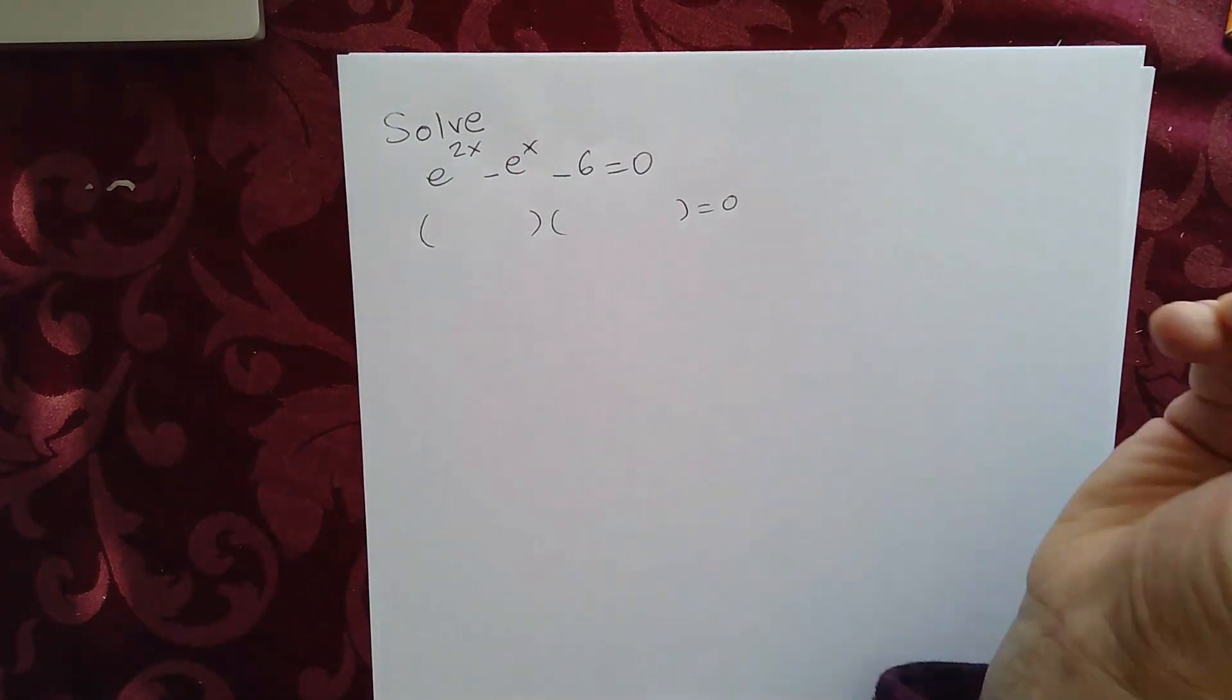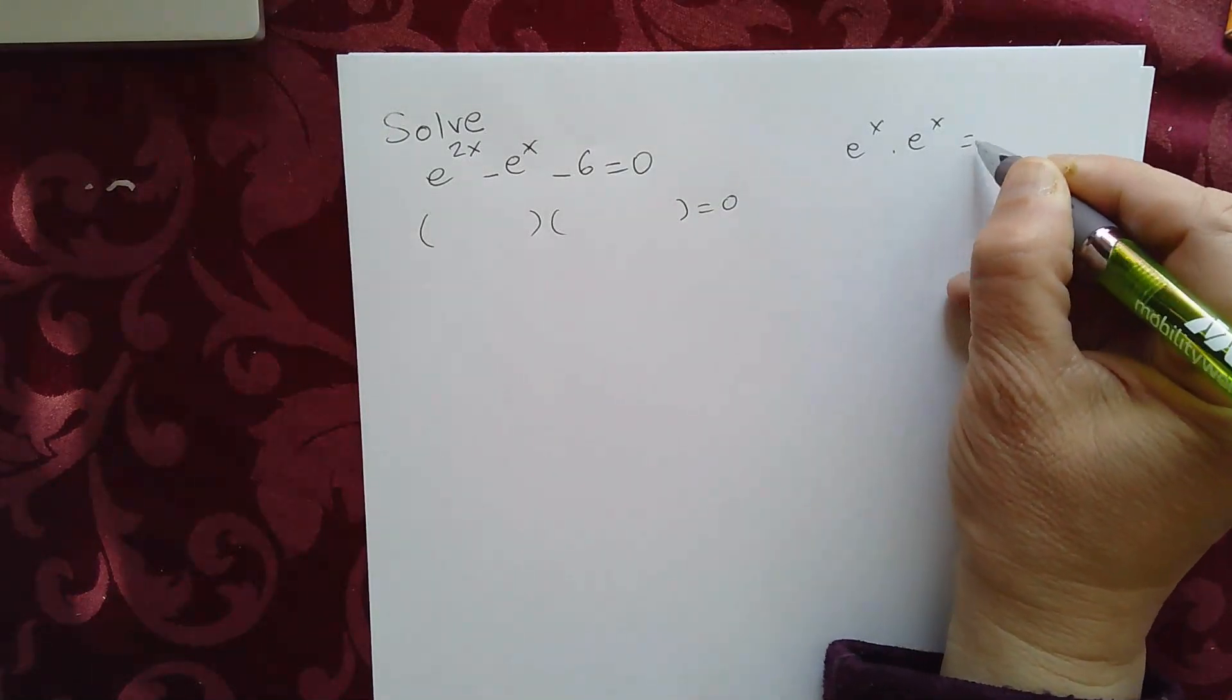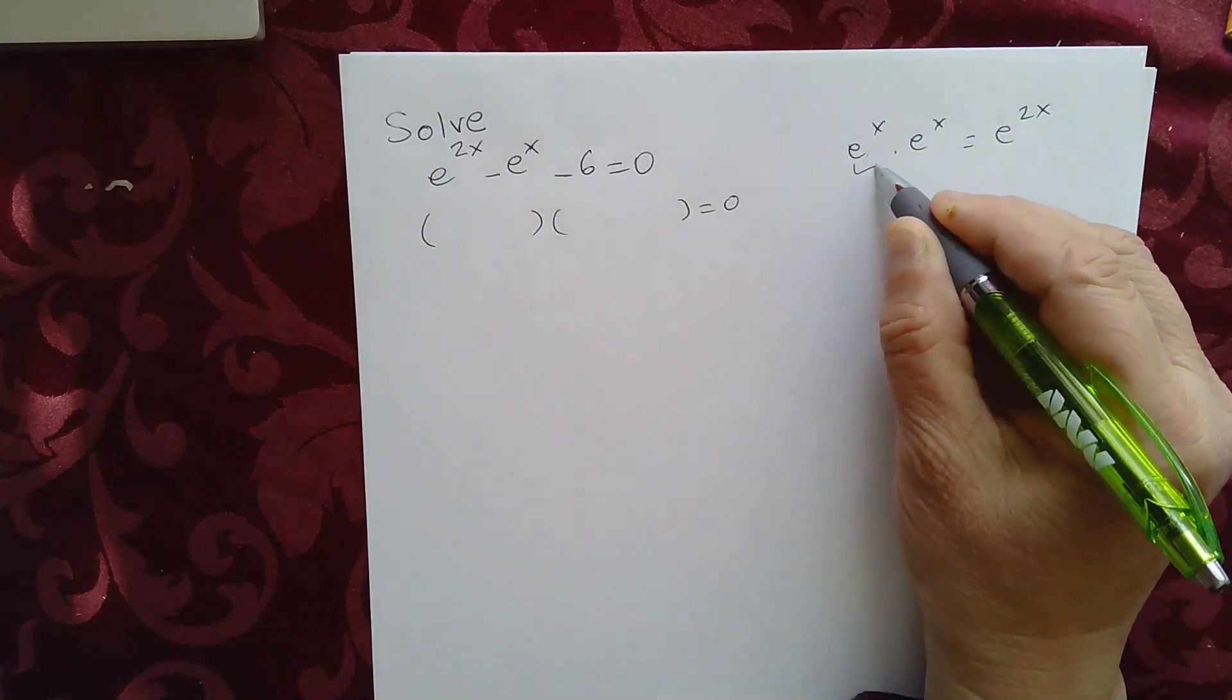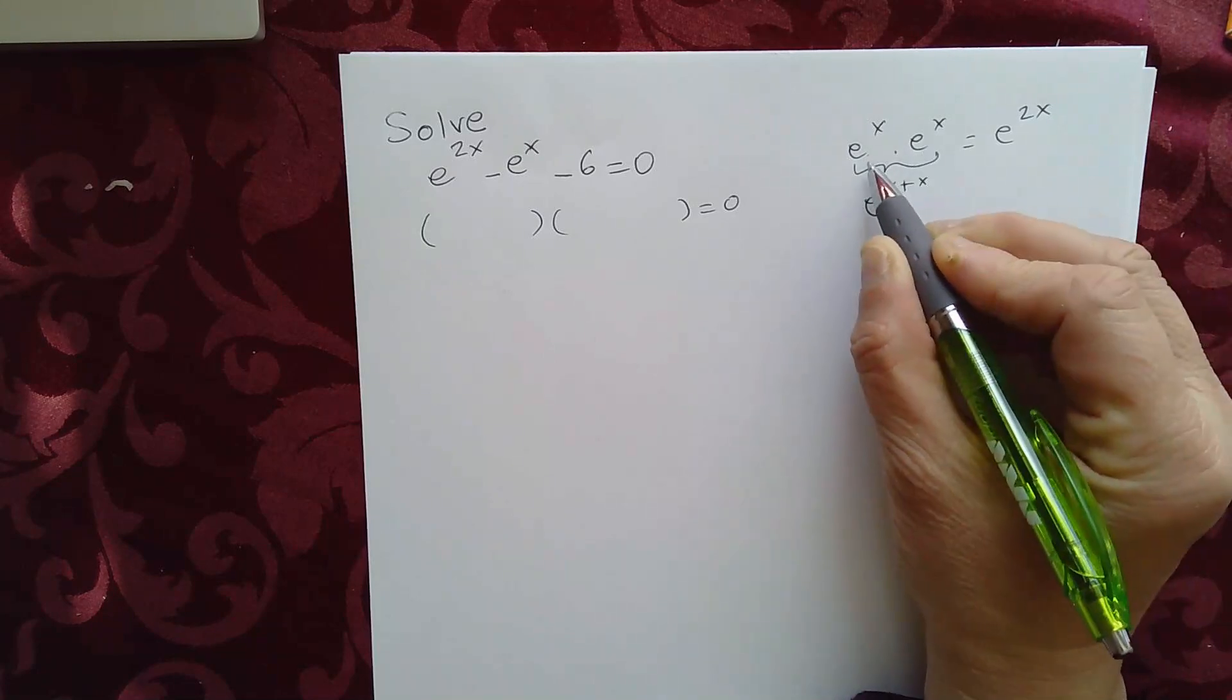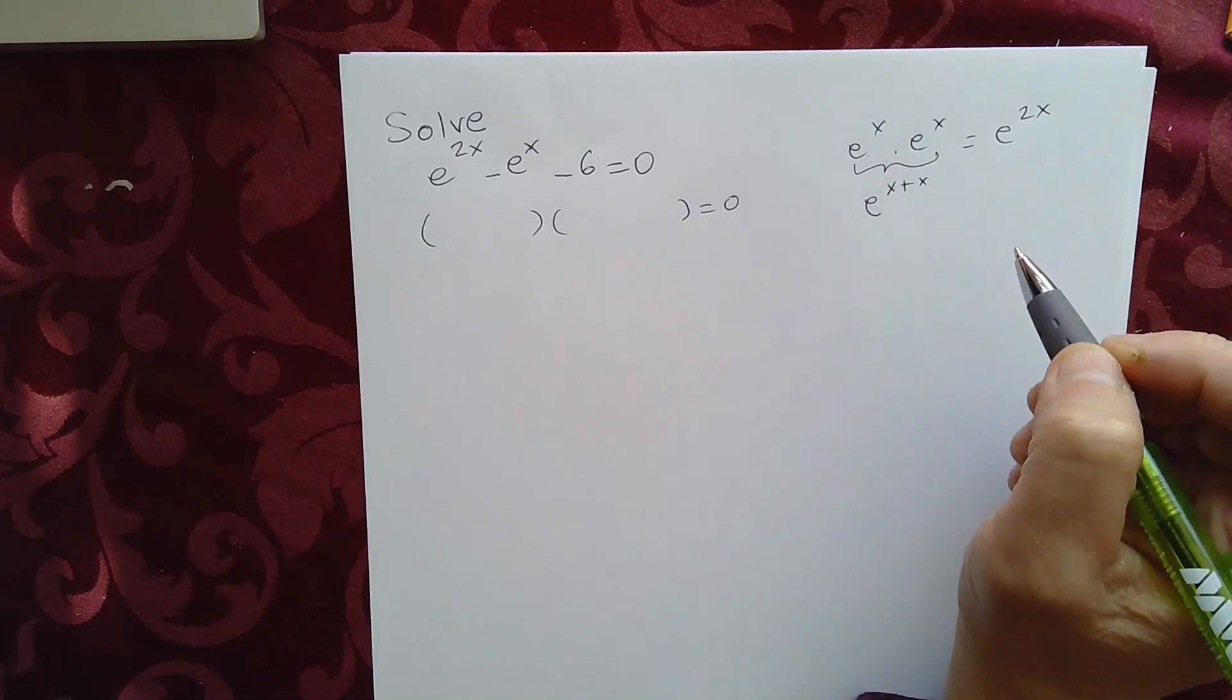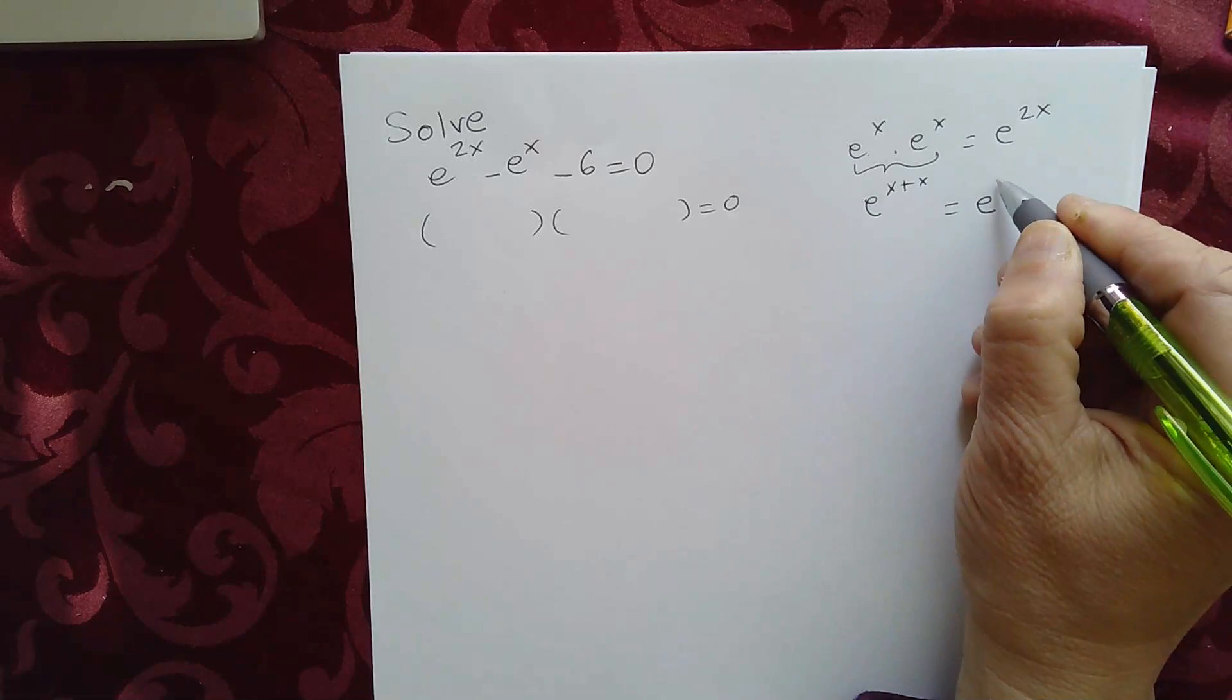Now, if you recall, e to the x times e to the x gives me e to the 2x. Because what we have here is e to the x plus x. So we have the product with the same base. You have to add the powers. So that gives me e to the x plus x, that's 2x.